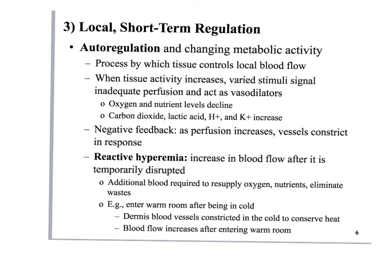Reactive hyperemia is an increase in blood flow after it is temporarily disrupted. You're going to do this in lab this week — you'll check blood pressure. The cuff on your left arm cuts off the brachial artery, stopping blood from flowing through the arm. If you leave it on long enough, when you take it off, your arm feels really warm because blood is rushing in. All those cells have been starved for a little while of nutrients, so there's an over-amount of blood being pushed through the area. It's additional blood to resupply oxygen, nutrients, and eliminate waste.